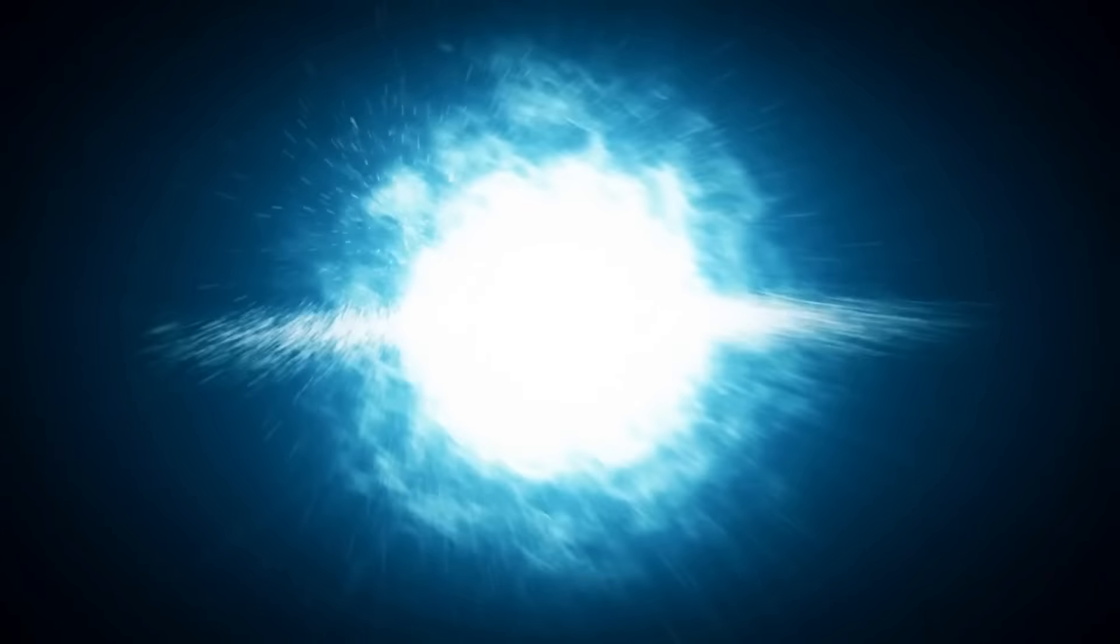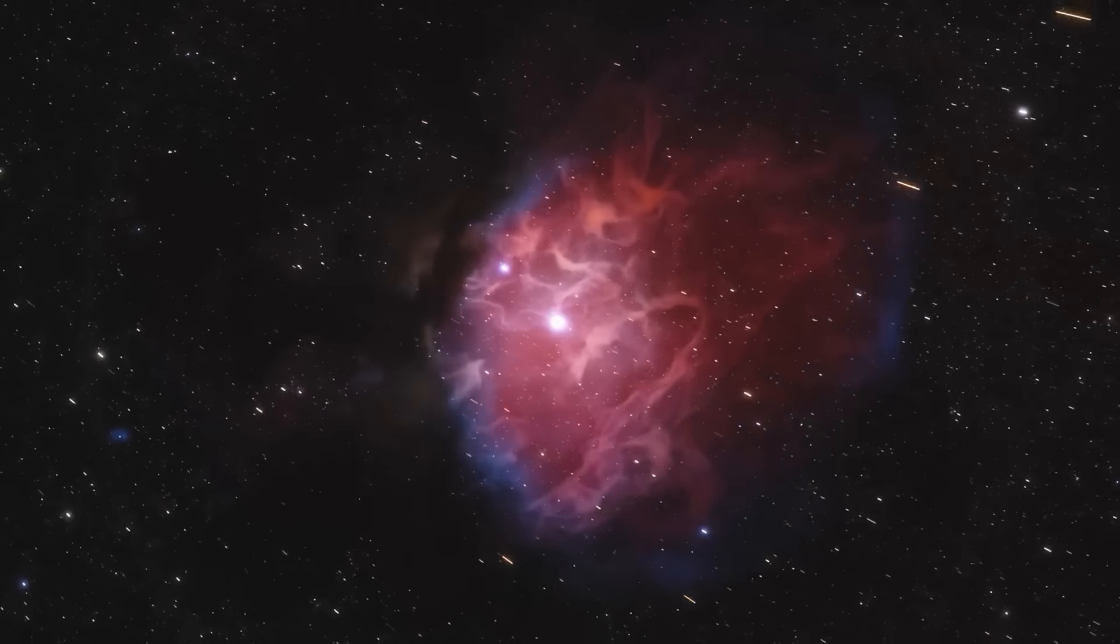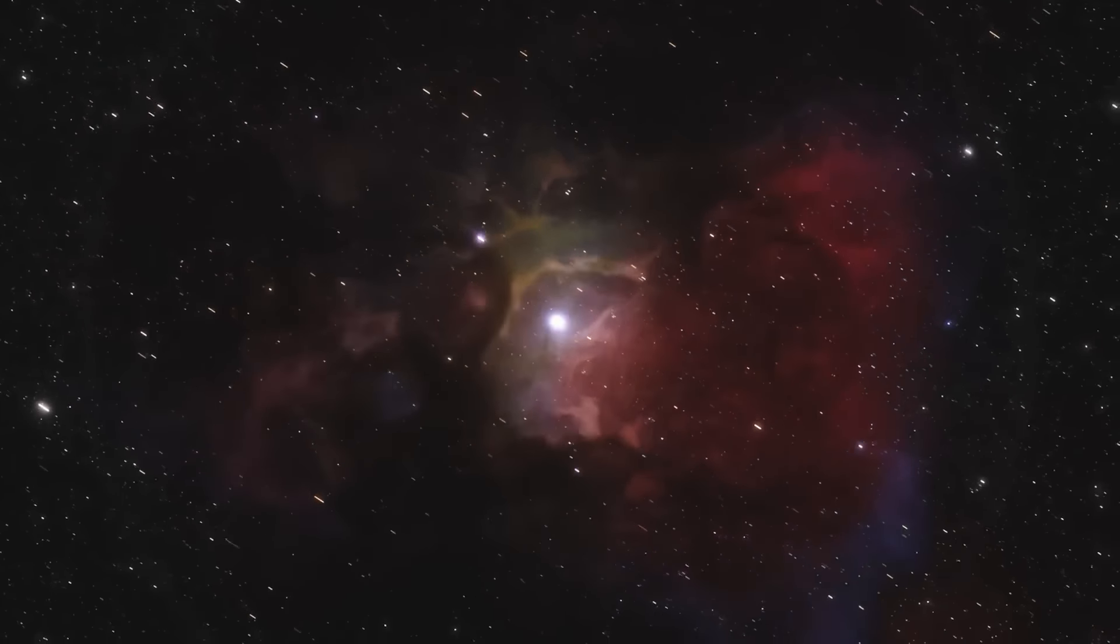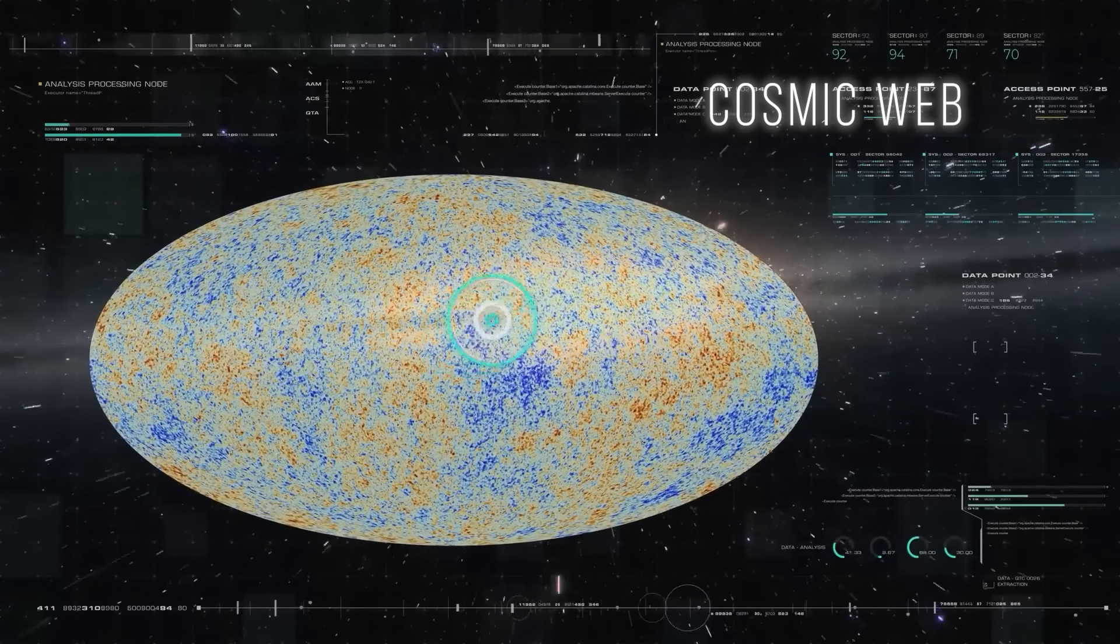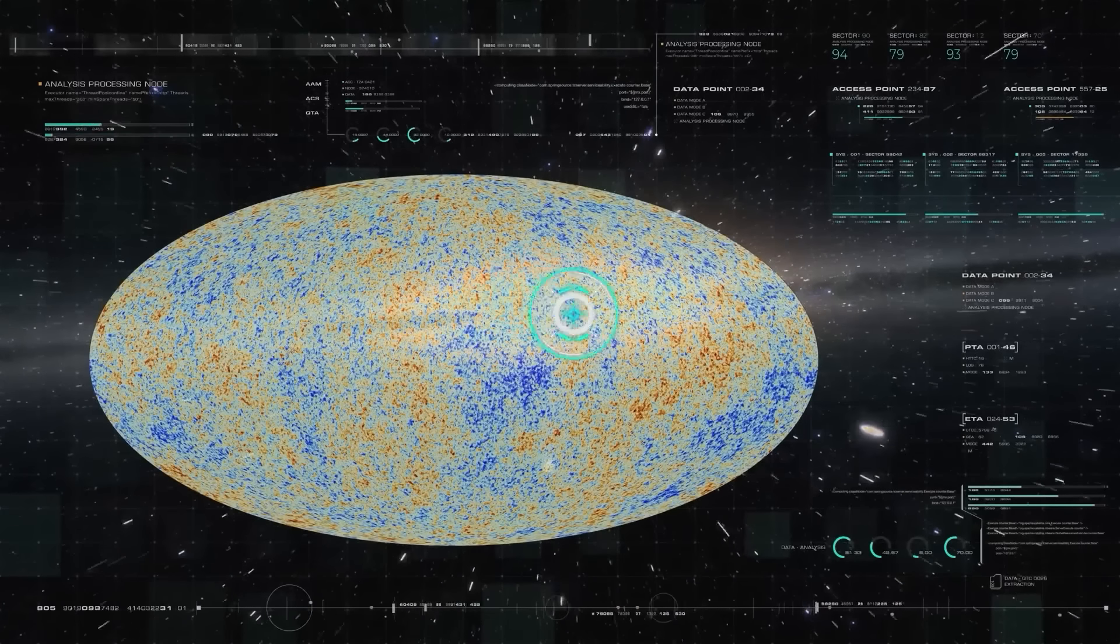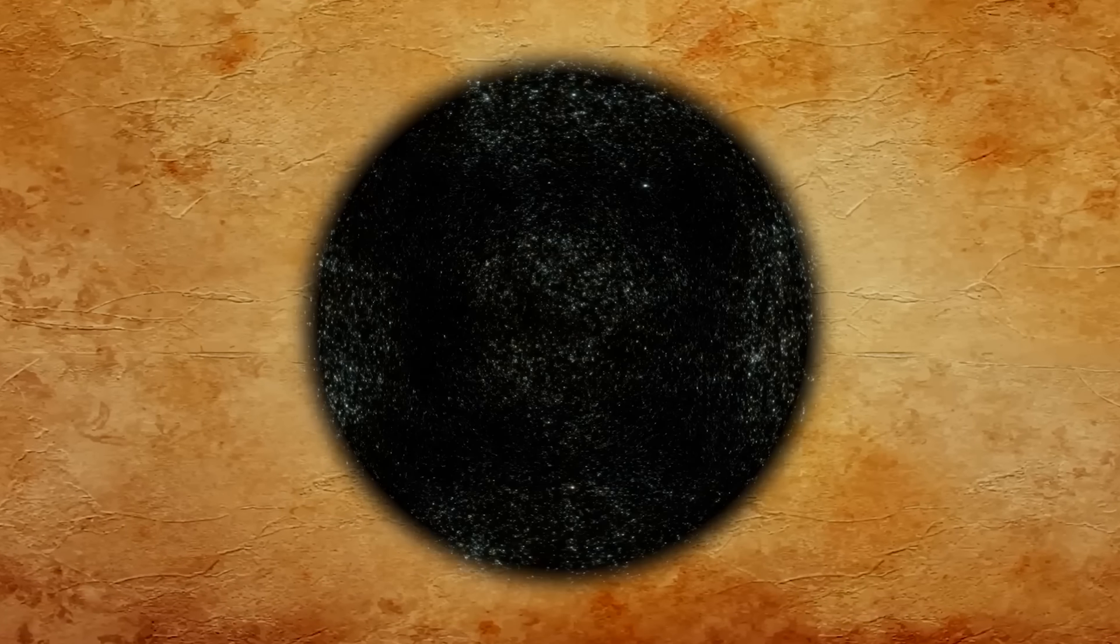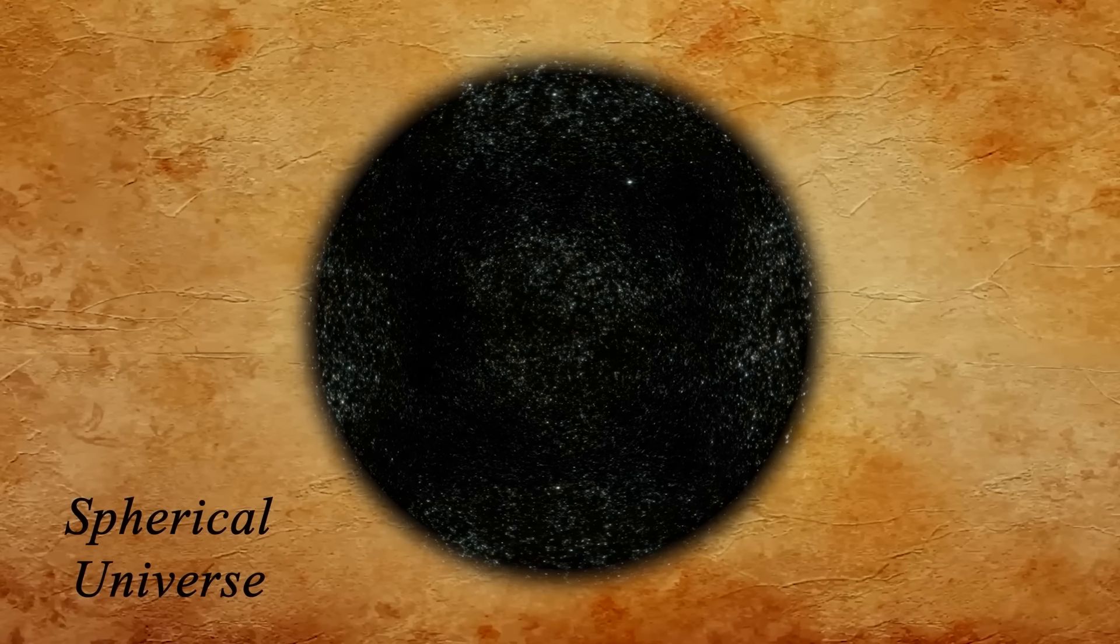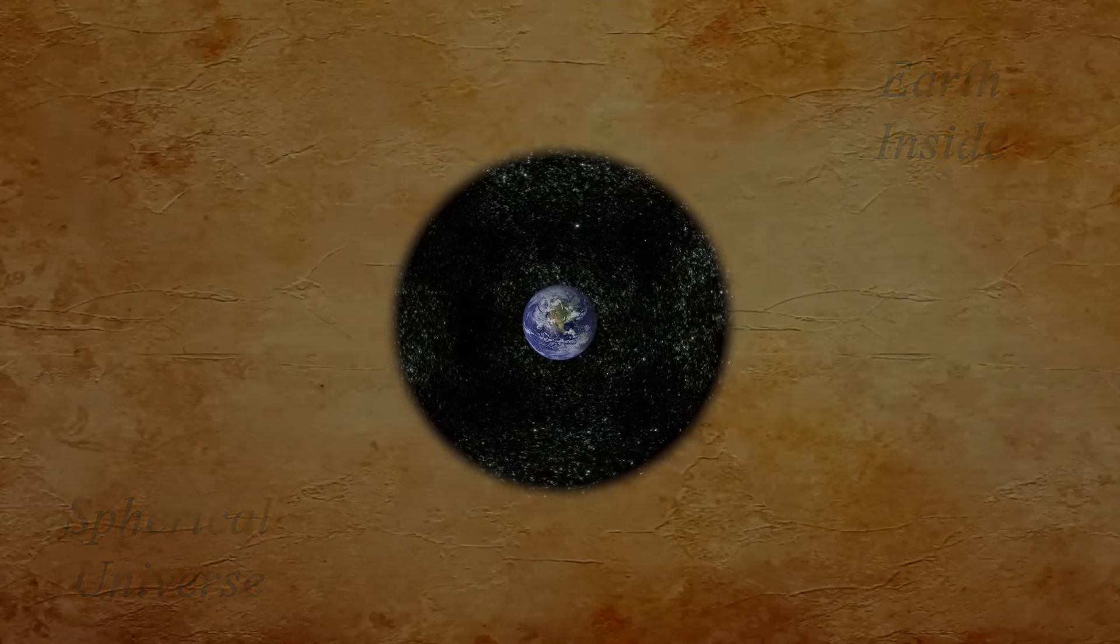These galaxies predominantly form clusters and superclusters, interconnecting to create a three-dimensional network traversing intergalactic space, commonly known as the cosmic web. In discussions about space, our reference point is typically the observable universe, or the known universe. This constitutes a spherical geocentric space, encompassing all detectable galaxies and matter from Earth. Their light emissions have traveled and reached the solar system over time.